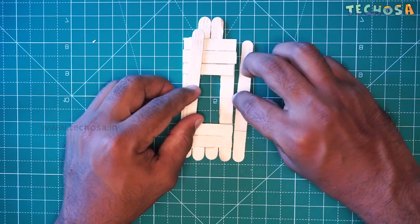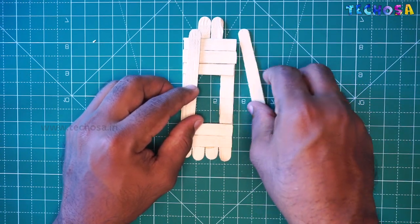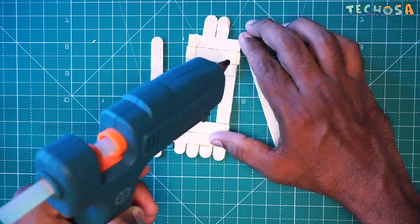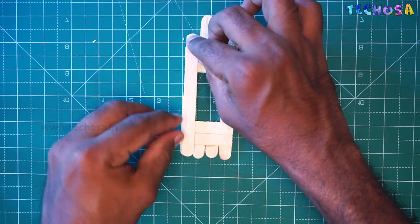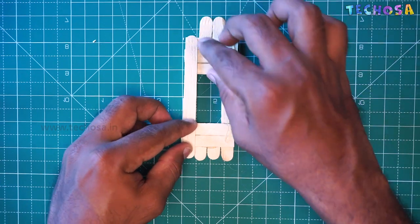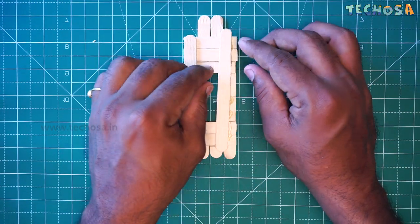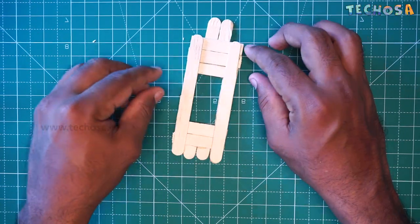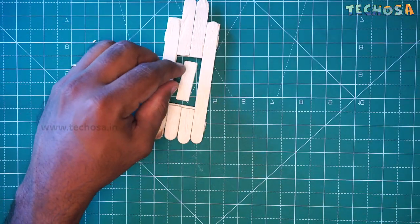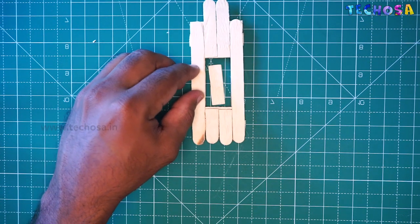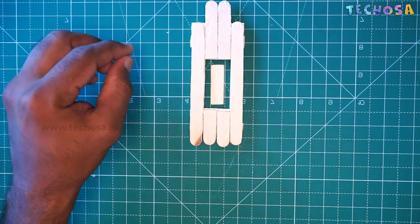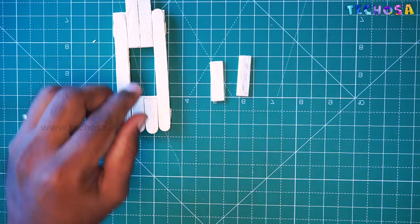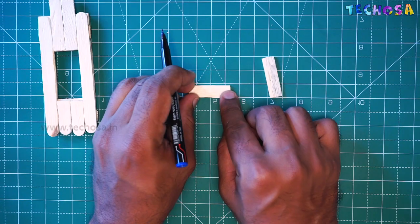Now take these two sticks and fix it on the top of the spot. Now let us make the pedal. Make sure that this pedal leaf should not touch the sides of this form. To make a pedal take two pieces of stick like this and mark the center portion.